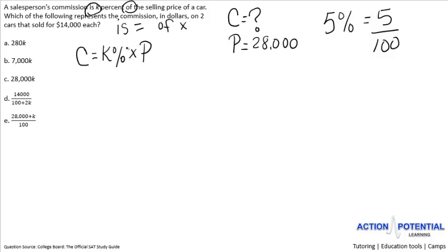So 5 percent means the exact same thing as 5 over 100. We'll do the same thing here. K percent then is the exact same thing as K, the number, over 100. C is our unknown, P is 28,000, and K percent is the same thing as K over 100. So we have each piece of our equation accounted for.